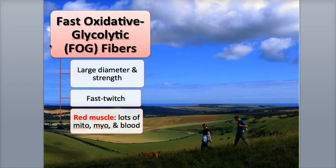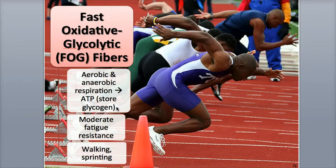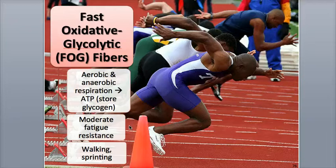Fast oxidative glycolytic fibers are similar to the slow oxidative fibers in that they also contain large concentrations of myoglobin, mitochondria, and capillaries, have a dark red color, and can produce moderate amounts of ATP through aerobic respiration. Of the three fibers, they often have the largest diameters. They can also store more glycogen than the slow oxidative fibers, which allows them to produce ATP through anaerobic glycolysis. This ability makes them moderately resistant to fatigue. They are labeled as fast twitch fibers with a contraction speed around 100 milliseconds, and can hydrolyze ATP three to five times faster compared to the slow oxidative fibers. These fibers are more abundant in the leg muscles and are used for activities such as running, sprinting, and walking.